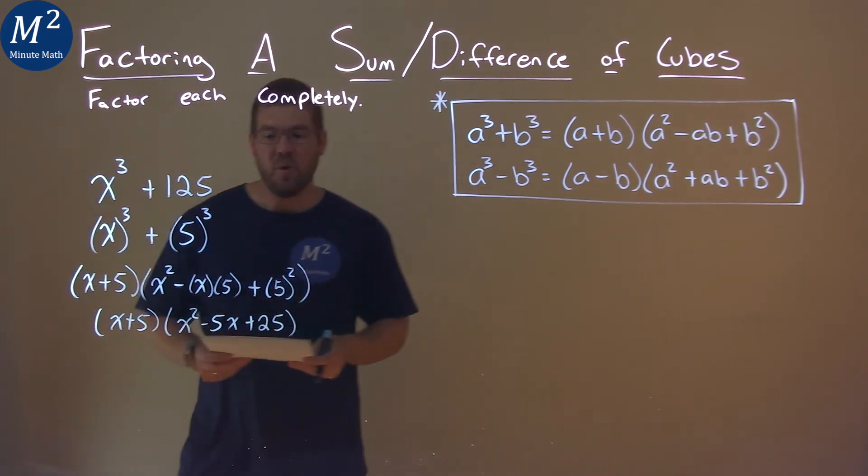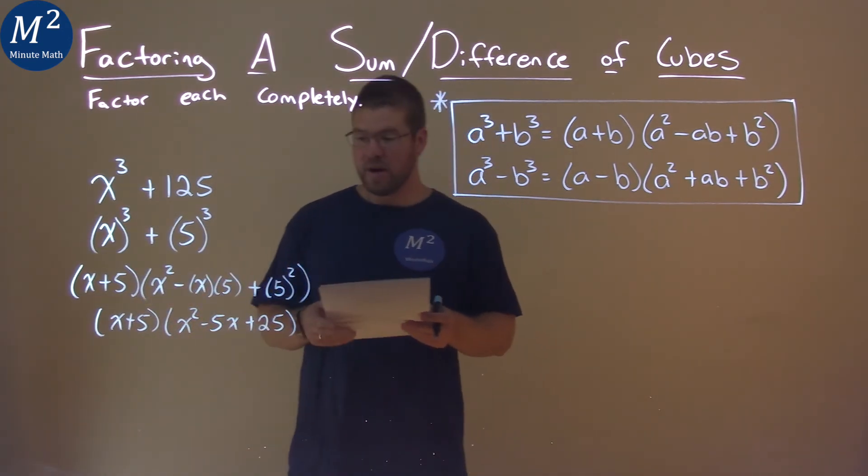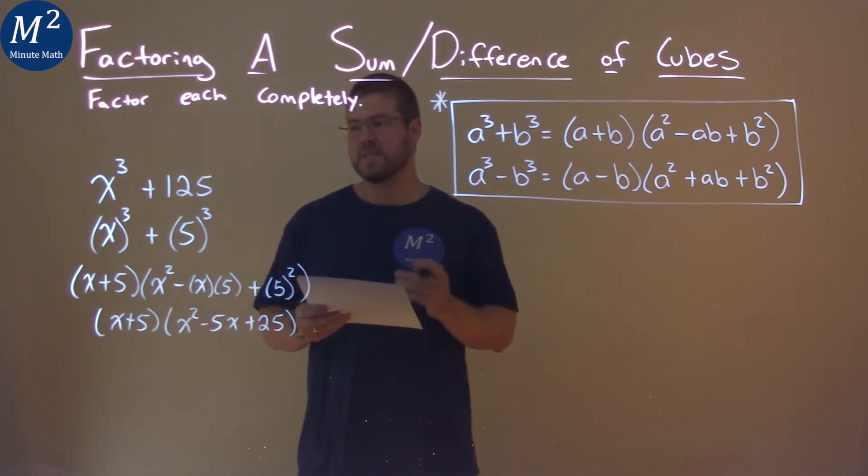And so we've actually factored completely, and our final answer is x plus 5 times x squared minus 5x plus 25.